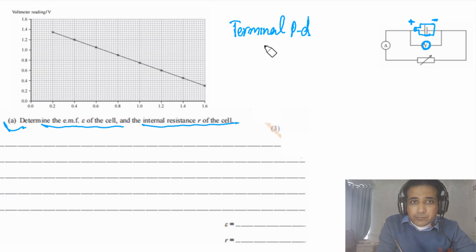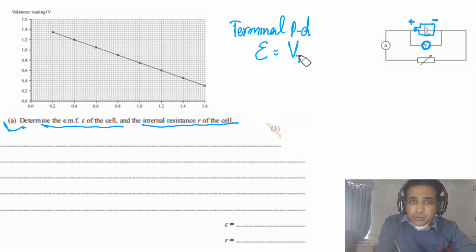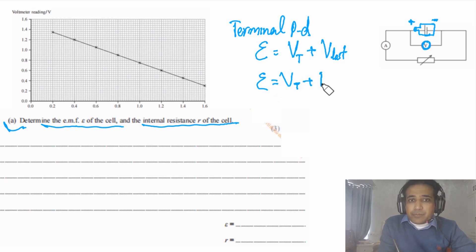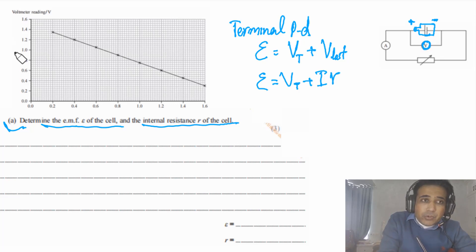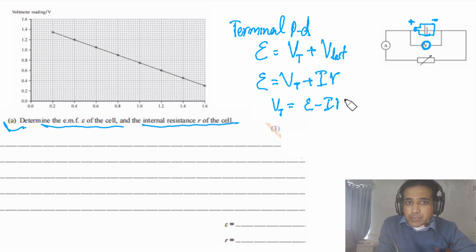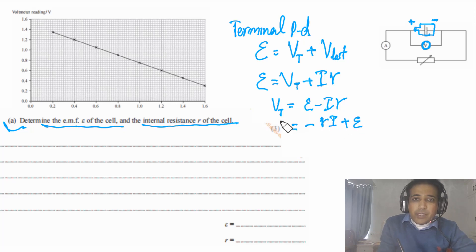Writing down the EMF equation: EMF = terminal PD + voltage lost in the battery due to internal resistance. So EMF = V_T + I·r. Rearranging: V_T = E − I·r. We can rewrite this as V_T = −r·I + E. For this question, the y-axis reading is V_T (terminal PD), so comparing with the straight-line equation y = mx + c, the y-intercept represents EMF and the gradient represents negative internal resistance.